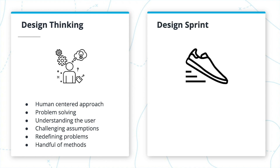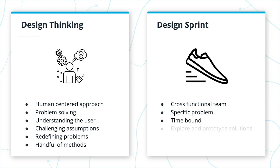A design sprint, on the other hand, happens when you bring together a cross-functional team to solve a specific problem in a set amount of time. During a design sprint, you will explore and prototype solutions and then test them with real users. Throughout the entire design sprint, you will use design thinking methods that are specific for each phase of the sprint.